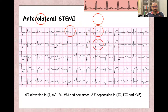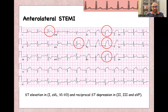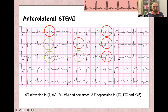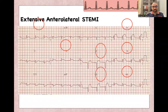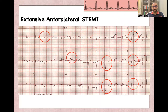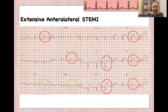For anterolateral STEMI, there is ST elevation in leads 1, V1, V2, V3, AVL, with reciprocal changes in inferior leads 2, 3, and AVF. Extensive anterolateral STEMI, as noted, is usually due to a thrombus in the proximal part of the LAD. There is ST elevation and Q-waves in leads V2, V3, V4, V5, V6, plus leads 1 and AVL, plus reciprocal changes in leads 3 and AVF.